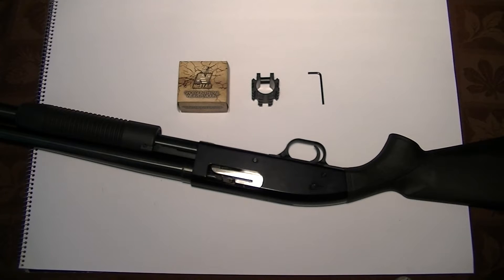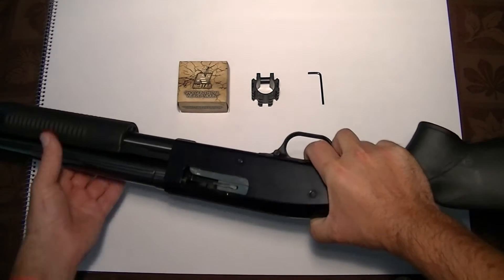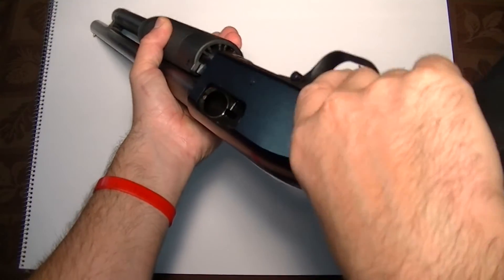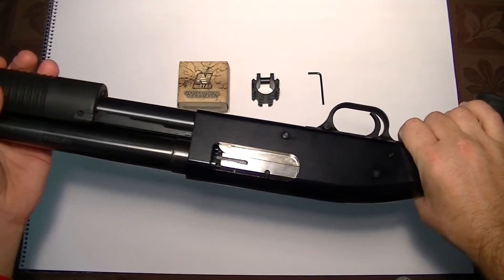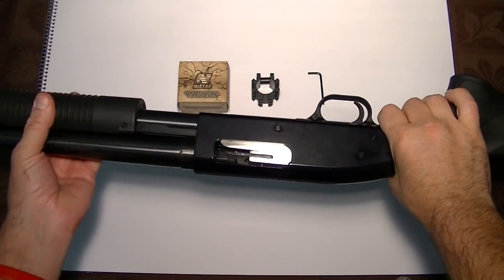I put a NC Star shotgun tri-rail on a Maverick 88 18.5 inch special purpose shotgun 12 gauge. Let's go. First of all, it's cleared as you can see, it's empty.